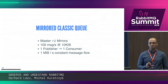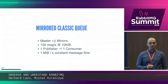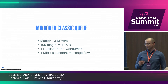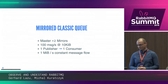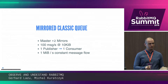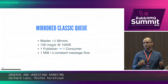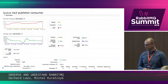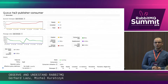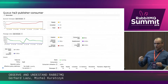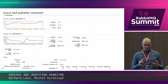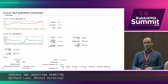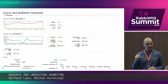This is a typical mirrored classic queue — it has one master and two mirrors. This runs in a three-node cluster and we're publishing 100 messages per second. The messages themselves have 10 kibibytes — and this is important. One publisher, one consumer — a very simple setup. The thing to remember is that there is a constant message flow, so we publish and consume messages constantly, and the throughput both in and out is one megabyte per second. In the RabbitMQ management view, we can see the master is running on RabbitMQ 0, the first slave on RabbitMQ 2, and the second slave on RabbitMQ 1.